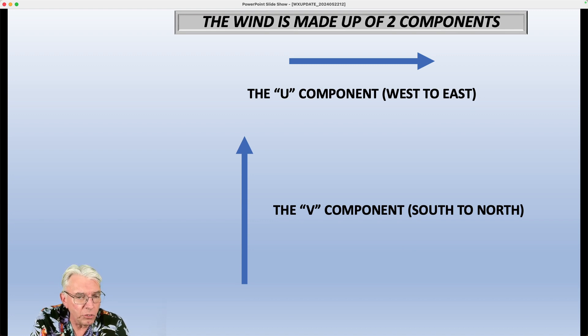So if the wind is blowing from the south toward the north, then V is positive. If it's blowing from north to south, it's negative. And on the other side of the ledger, if the wind is blowing west to east, U is positive. If it's blowing east to west, U is negative.